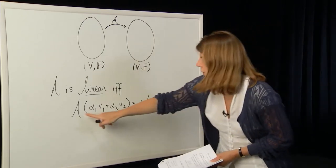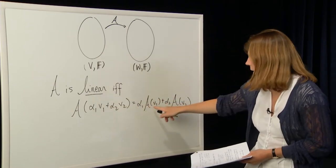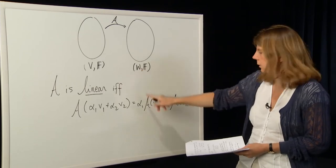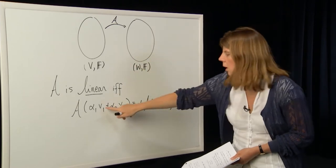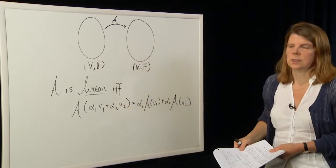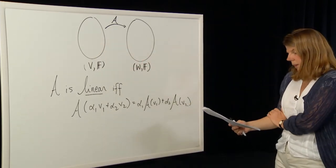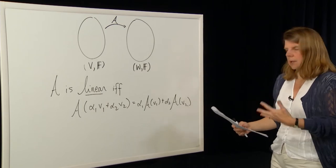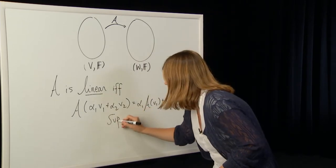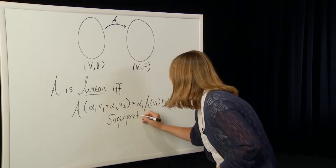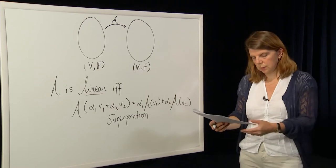So this is our map notation: A operates on elements of the domain and gives us a linear combination of elements in the space W. A(v1) and A(v2) are elements in W, where v1 and v2 are elements in V — our domain and codomain respectively. This is a very straightforward, simple property called superposition, and it's typically easy to state and easy to check. We can do a number of examples.